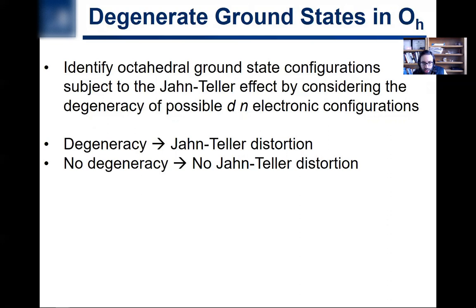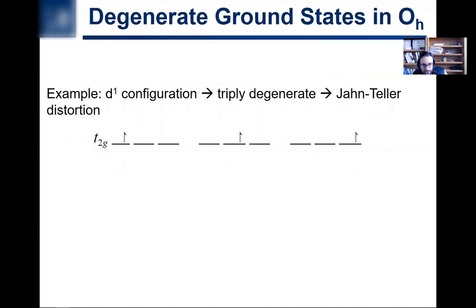If there is degeneracy in the electronic configuration — i.e., there are multiple ways you can place the electrons that have the same energy — then we are predicting that we will see some sort of Jahn-Teller distortion. If there's no electronic degeneracy, there won't be any Jahn-Teller distortion. For example, a D1 configuration has the one electron in the T2g, but there are three different orbitals you can put that electron in. So D1 is triply degenerate, and there will be Jahn-Teller distortion.